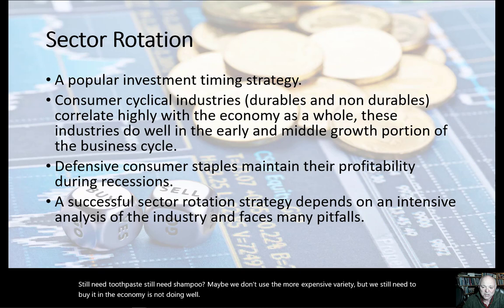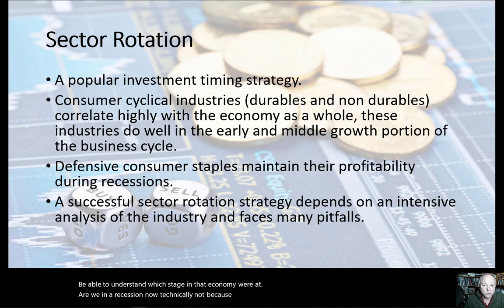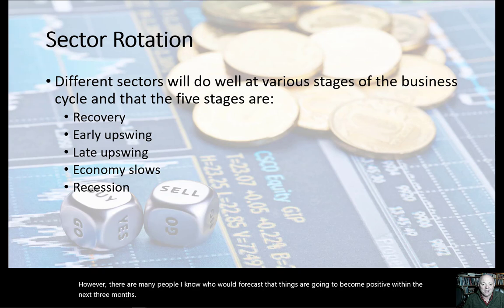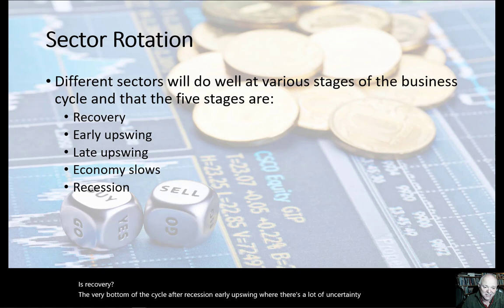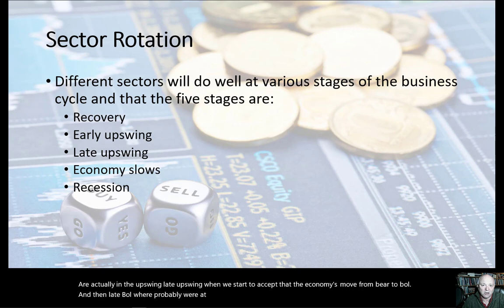A successful sector rotation strategy means understanding how the industry fits into the economy and which stage of the cycle we're at. Are we in a recession now? Technically not, because a recession requires two quarters of negative GDP. However, not many people would forecast positive things within the next three months. Different sectors will do well at different stages in the business cycle — recovery at the very bottom after a recession, early upswing with a lot of uncertainty, late upswing where we accept the economy has moved from bear to bull, late bull where the economy starts to slow, and finally officially in recession with two quarters of negative GDP growth.